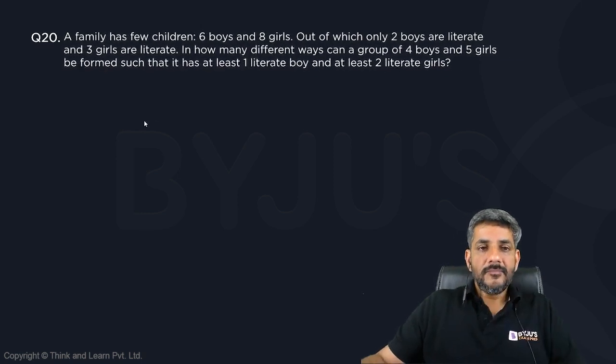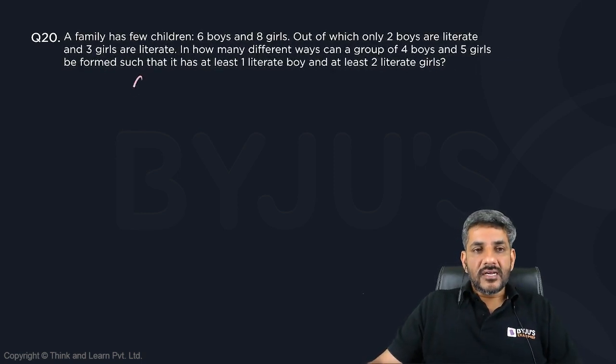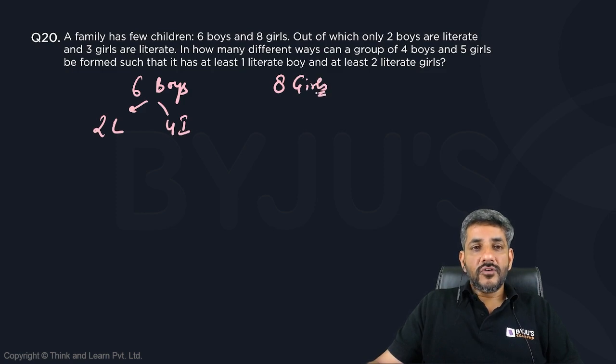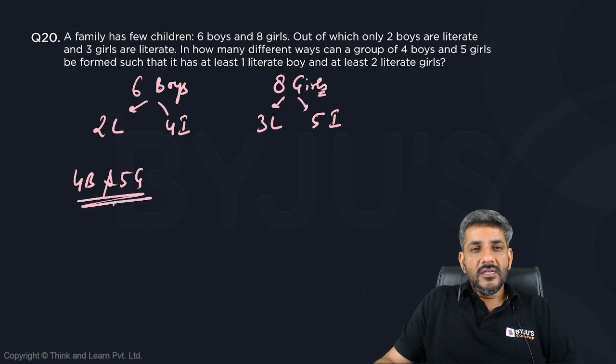Let's talk about it. The question says there are six boys. Out of these six boys, only two are literate, so four are illiterate. We have eight girls. Out of these eight girls, three girls are literate, so automatically five are illiterate.